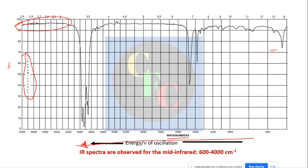Where transmittance is nearly 100%, say 95%, only 5% is absorbed, meaning absorption is low. But where transmittance is only 1 to 2%, more than 95% is absorbed, meaning the molecule is absorbing very strongly in that region. This is our required peak — in IR we call them bands, not peaks.